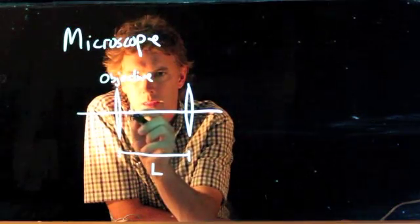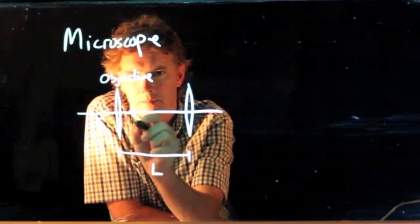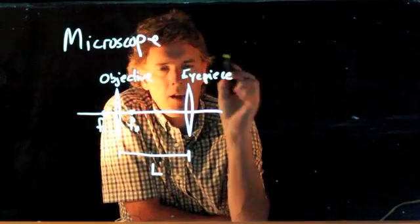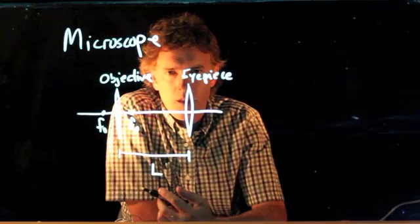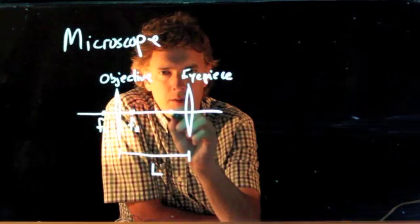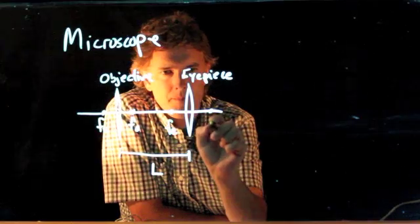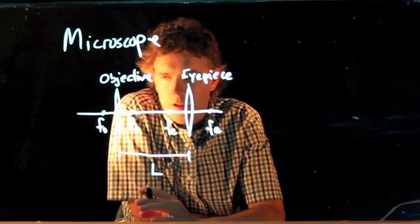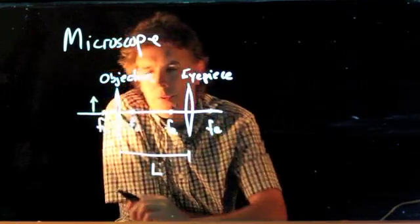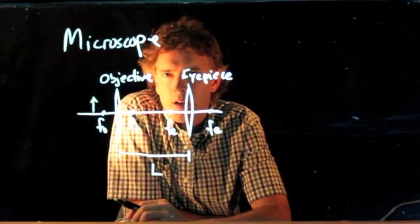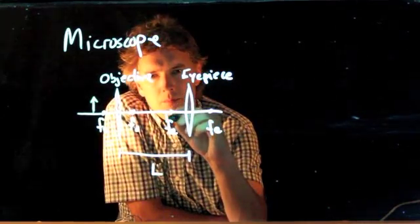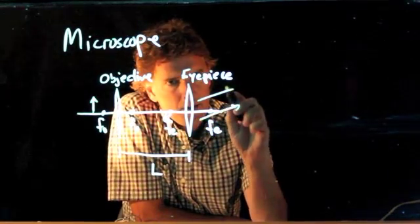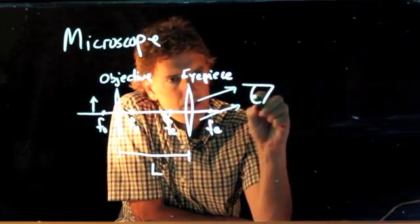The objective has a focal length about there. This lens over here is the eyepiece. The eyepiece also has a short focal length — it's usually a little bit longer than the objective, maybe something like that. The way a microscope works is when you put an object very close to the first focal point, you generate an image that is very close to the eyepiece focal point. And that image causes parallel rays to come out of the eyepiece, which you can then see with your eyeball.